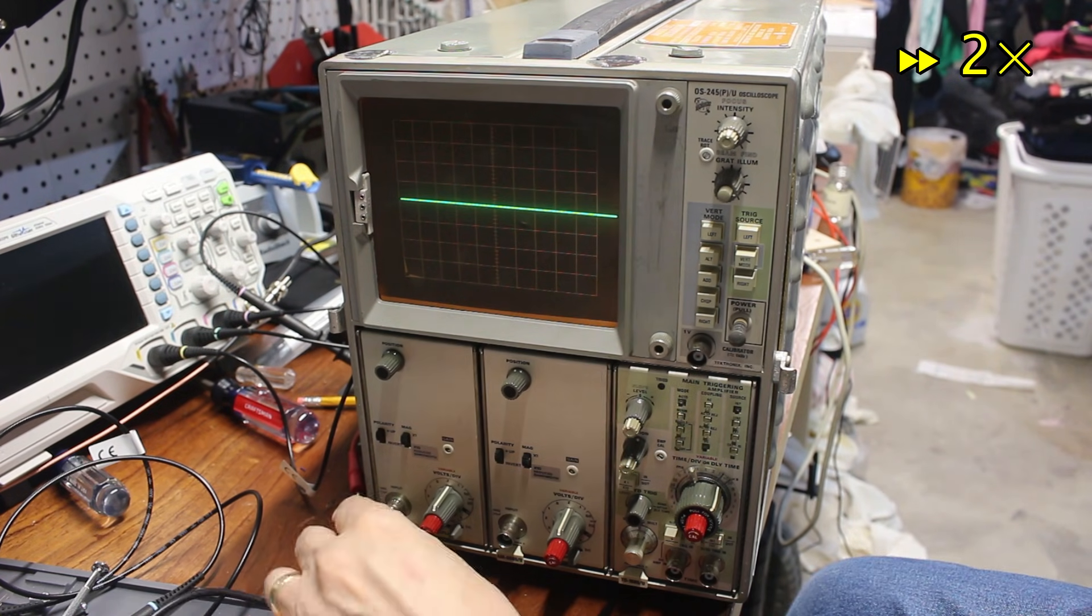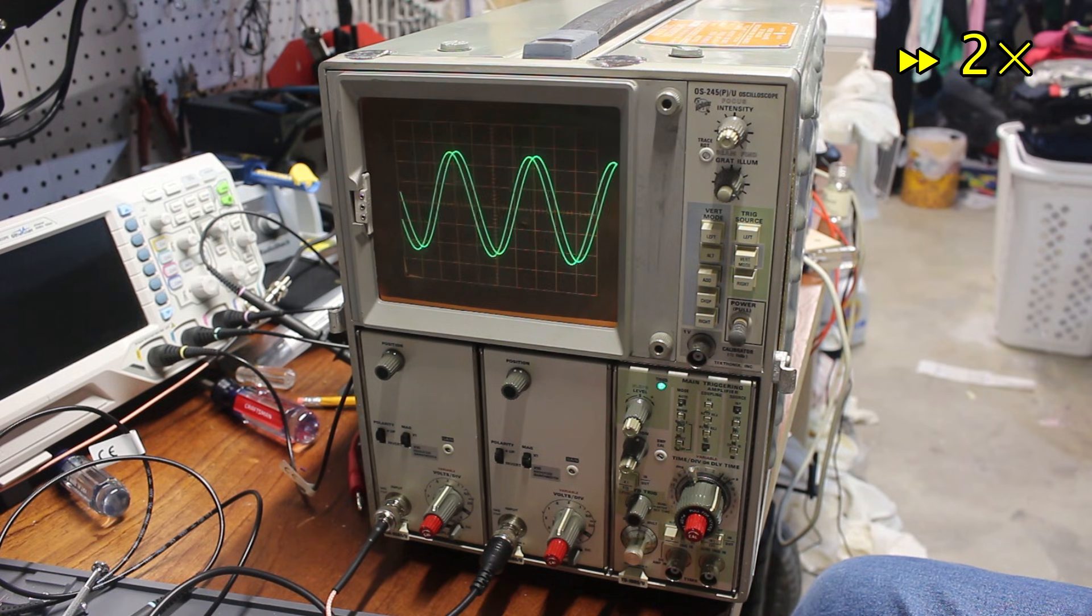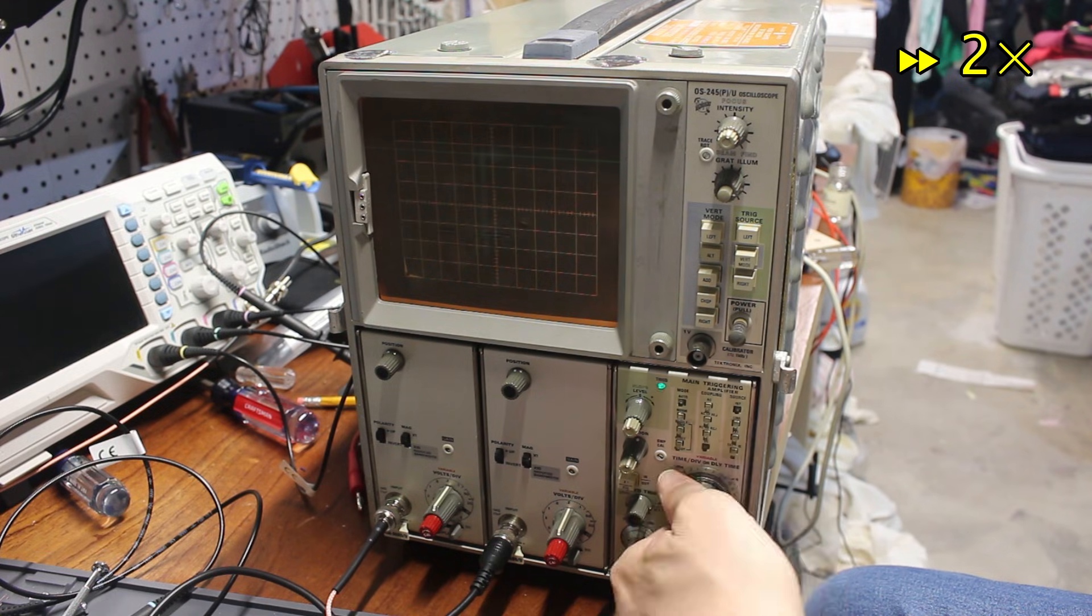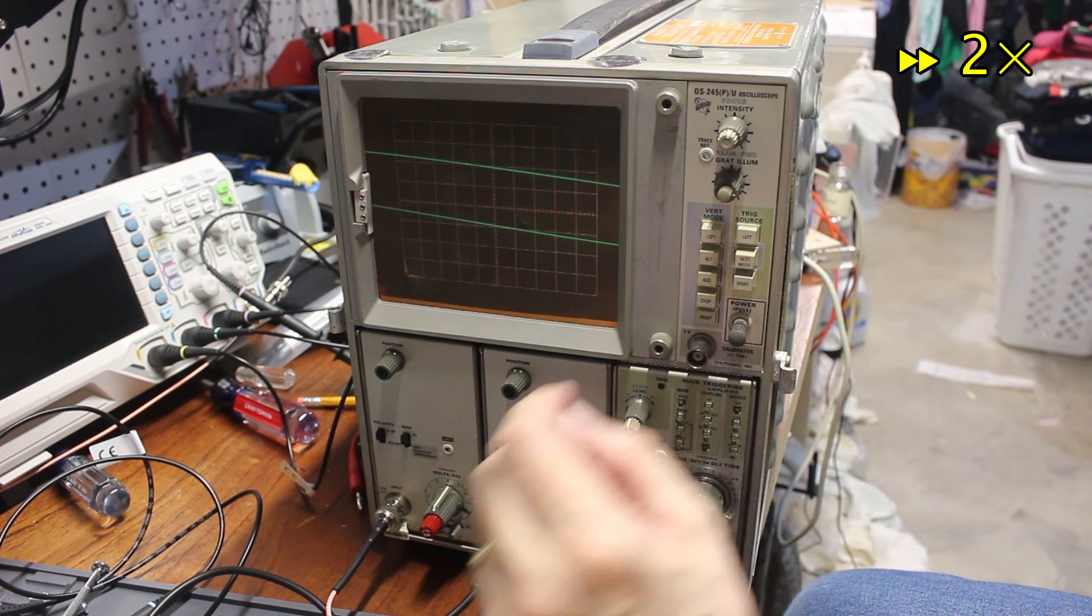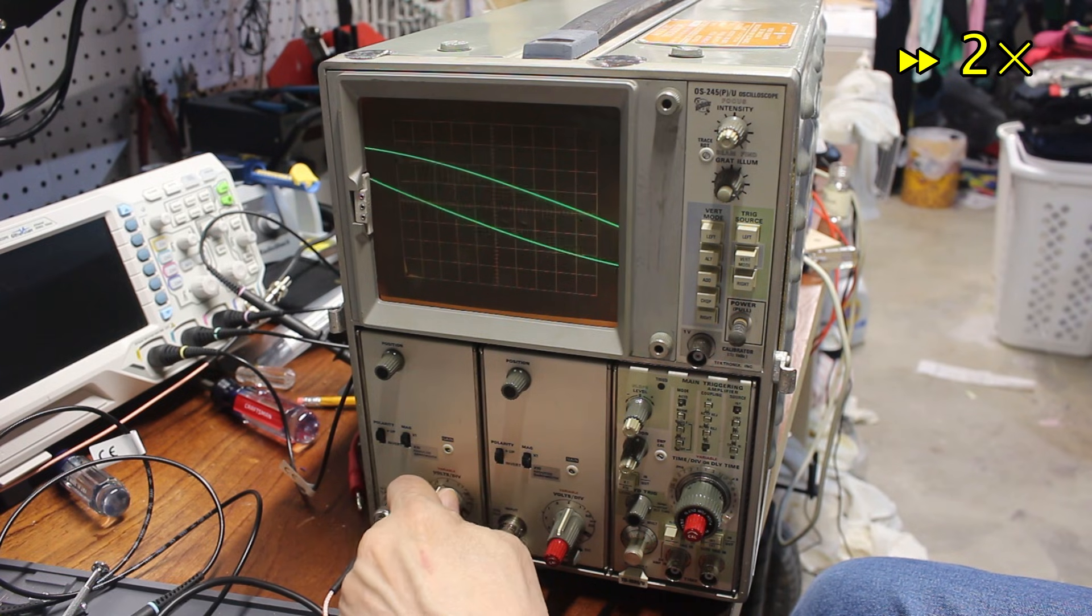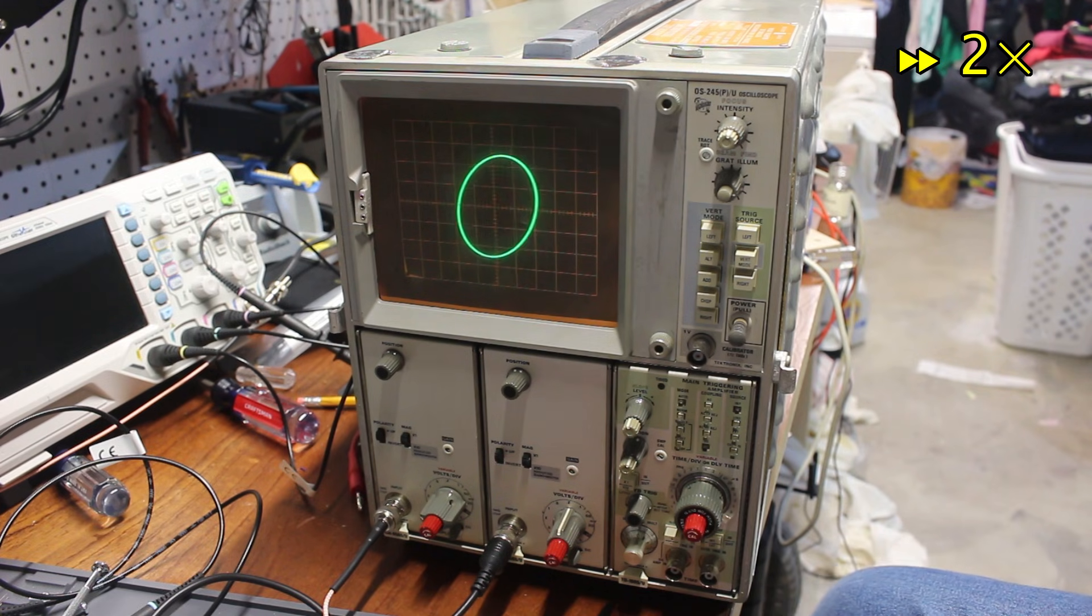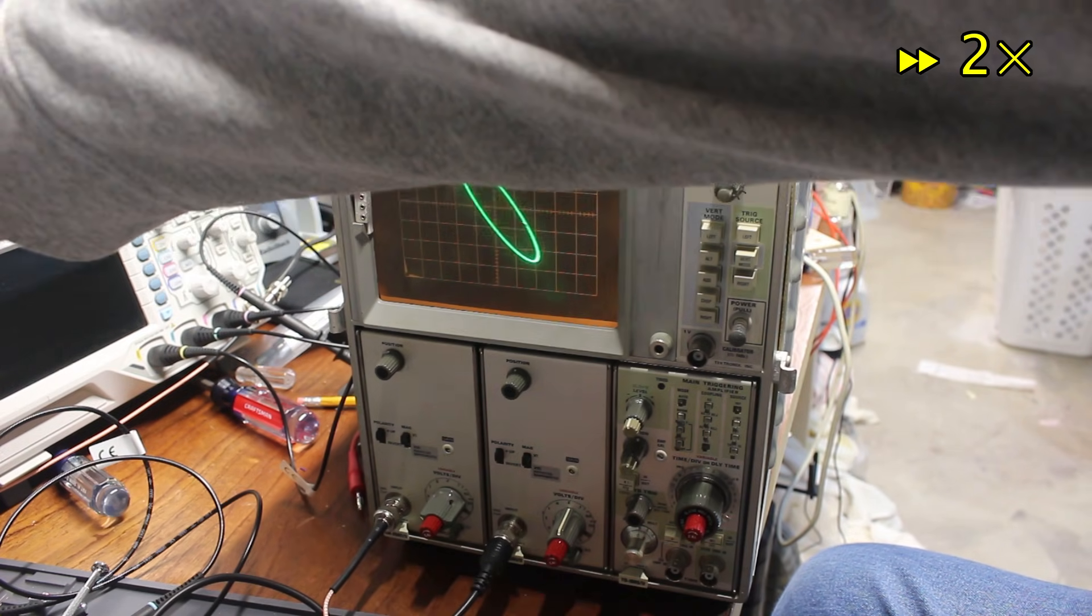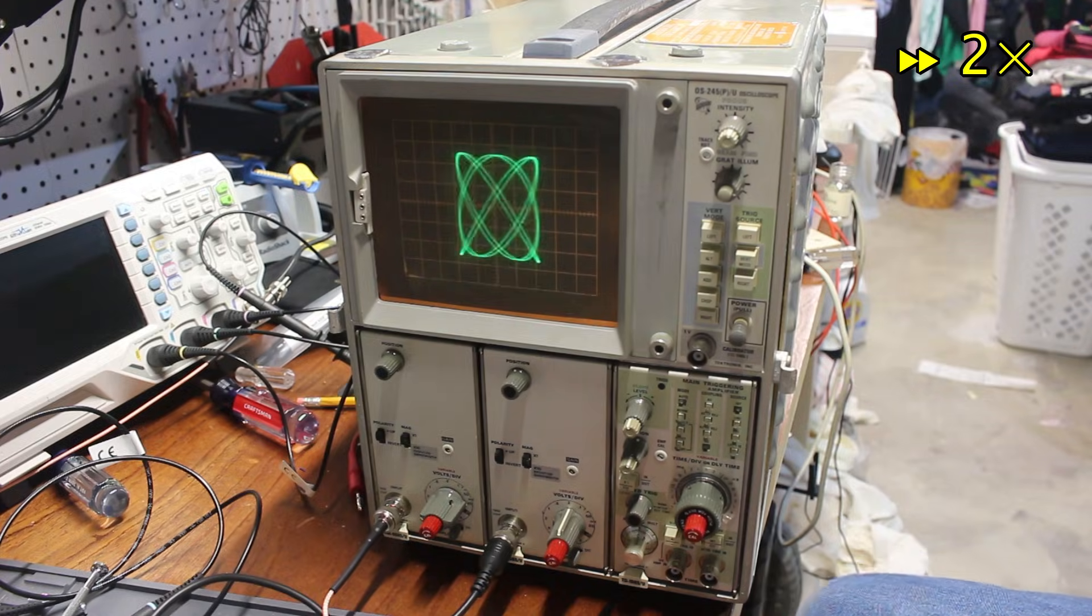Let's hook up my function generator to the two inputs. I can show a nice pair of waves. Once I remember how to set up for an X-Y display. I can put up a nice Lissajous figure. And I can change the frequency of one wave to make a fancier one. I might need to do a little more testing, but I think this scope is working again.